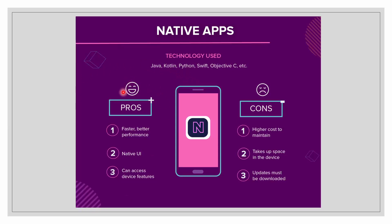The pros of native apps: because of their singular focus, native apps have the advantage of being faster and more reliable in terms of performance. They are generally more efficient with device resources than other types of mobile apps. Native apps utilize the native device user interface, giving users a more customized experience. We can also access device features such as Bluetooth, phonebook, contacts, and camera.